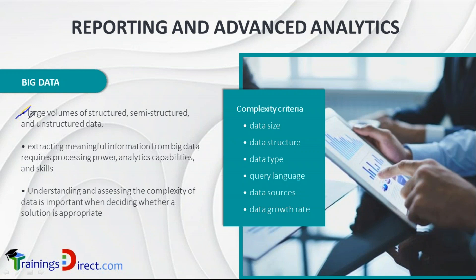Unstructured data could be information from different books and libraries — for example, a certain paragraph from different books on the same idea. Extracting meaningful information from big data requires a lot more processing power, multiple CPUs, analytical capabilities, and skilled people who understand which algorithms and systems can handle it. Tools like Hadoop and information miners work on big data.